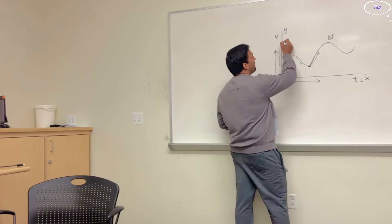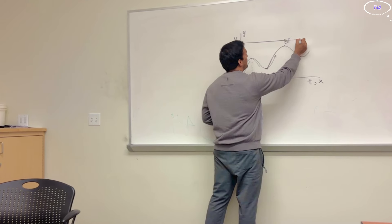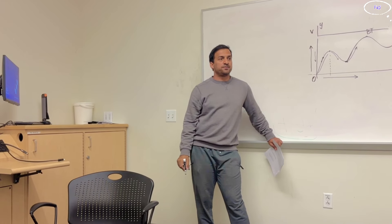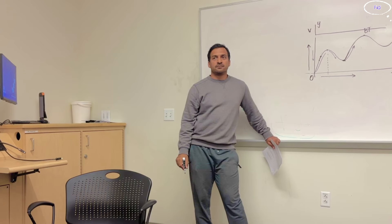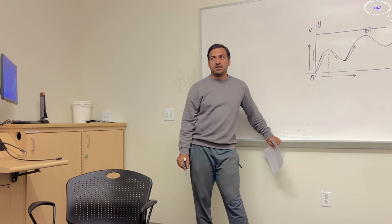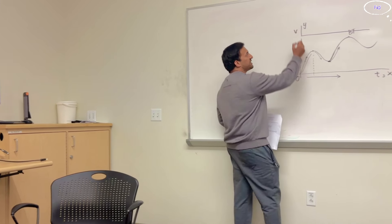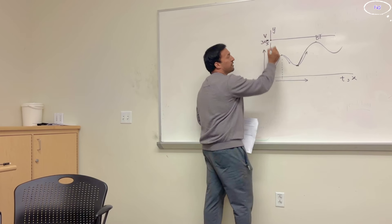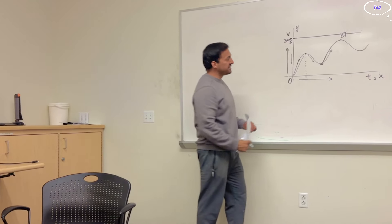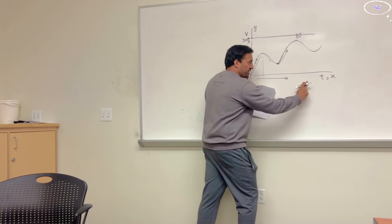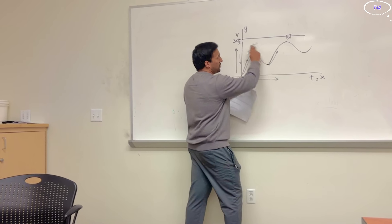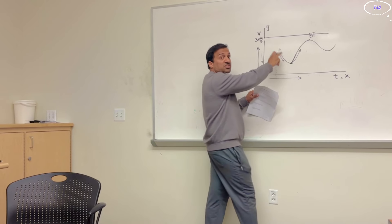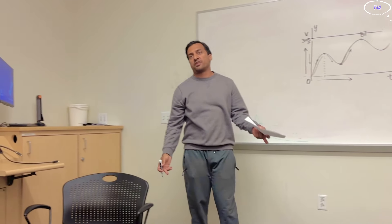What if you have a straight line parallel to the time axis? That represents constant speed — whatever value is on the y-axis, let's say 30 meters per second, remains constant as time passes along the x-axis. A line parallel to the time axis represents constant speed.